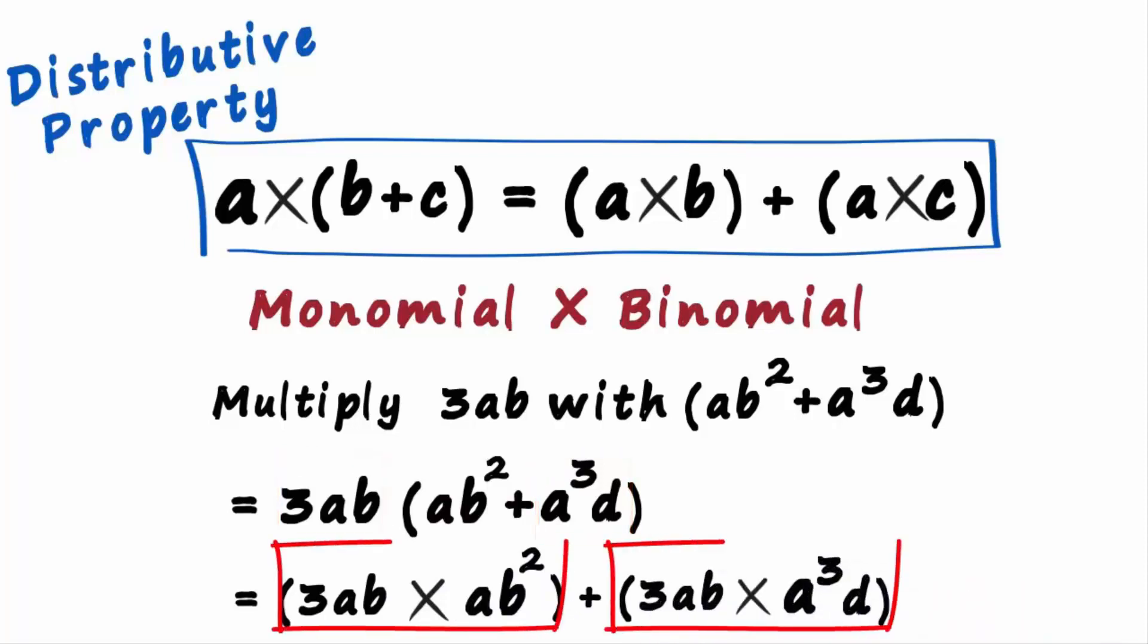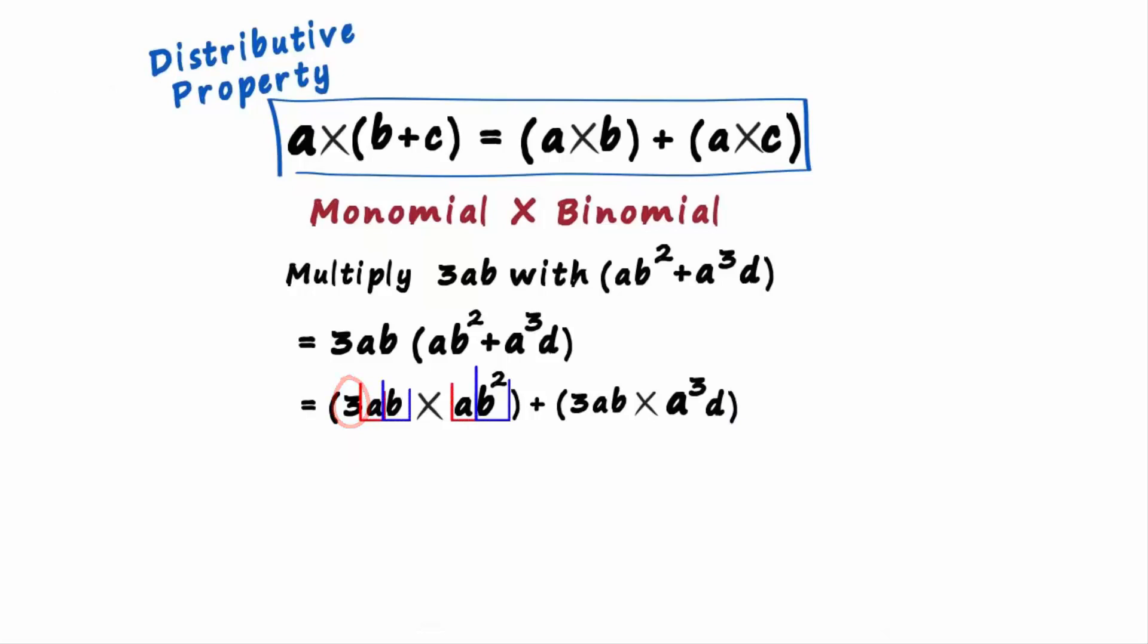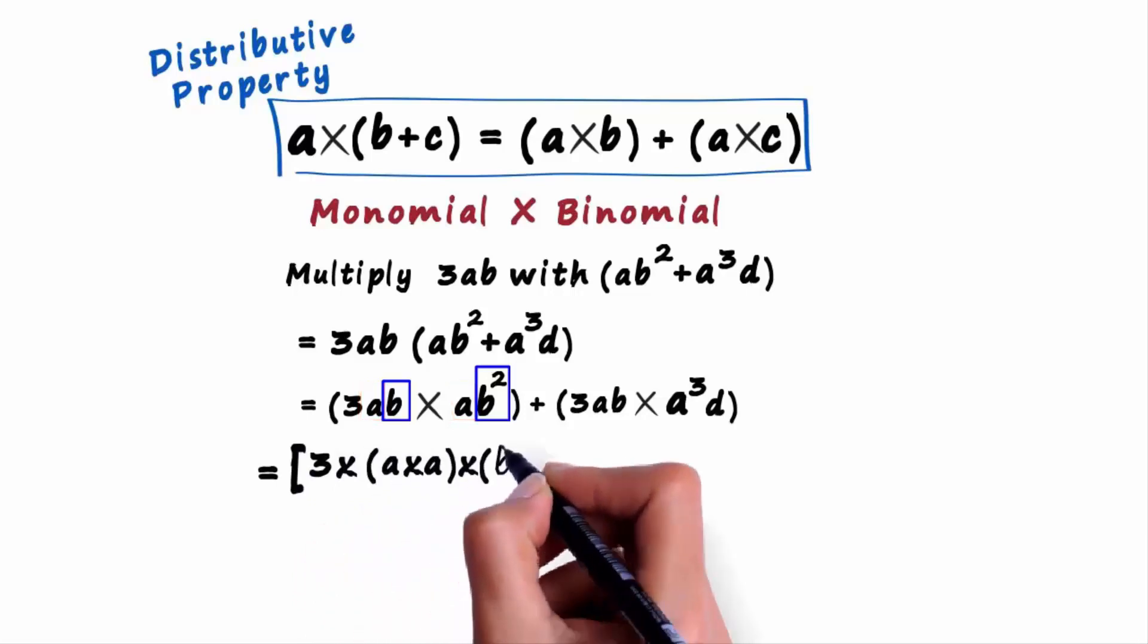Each of these groups now is a monomial multiplied by a monomial, so we group constants and same variables with their powers. The first group can be written as 3 multiplied by a times a, multiplied by b times b squared.